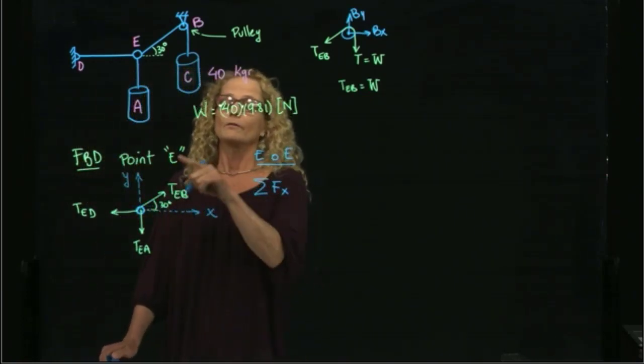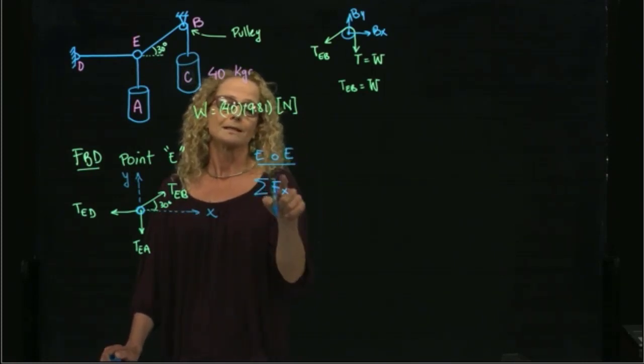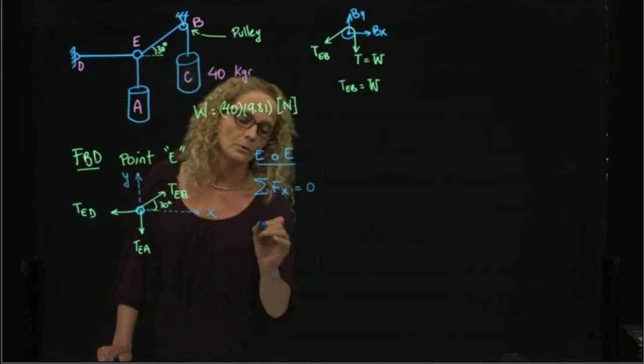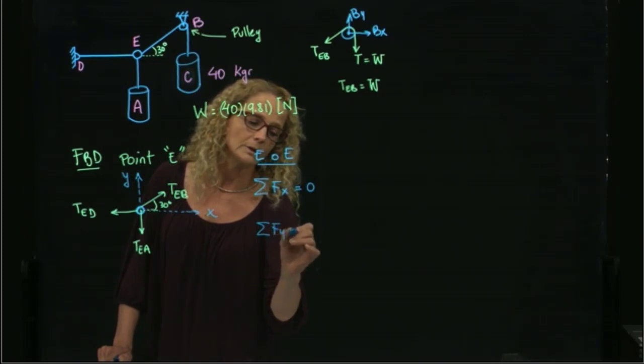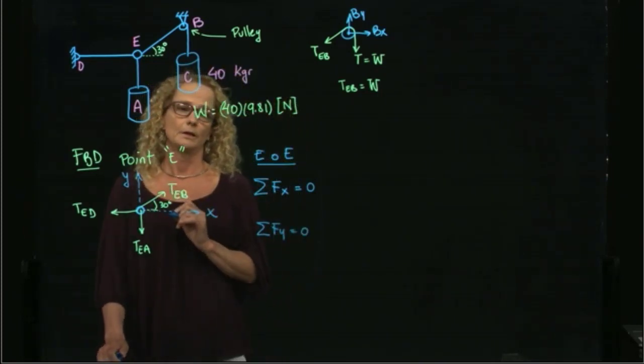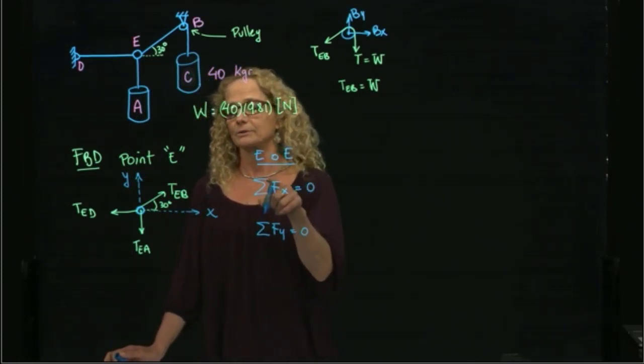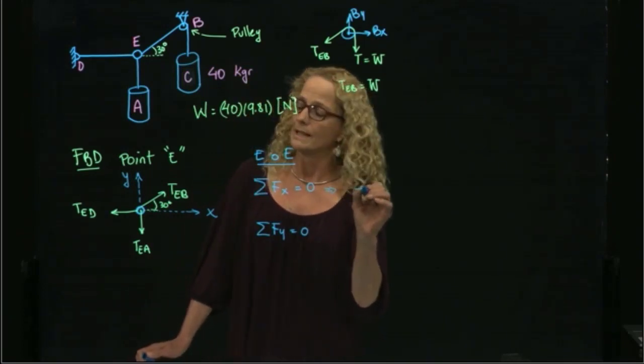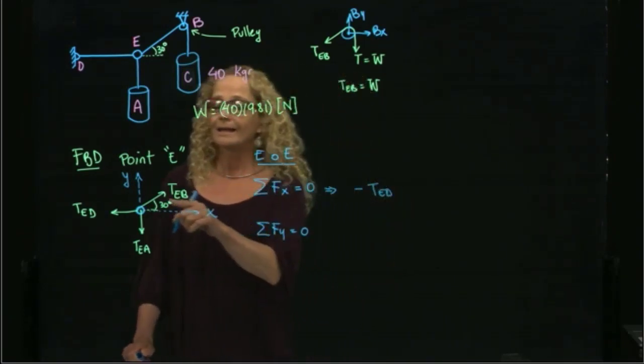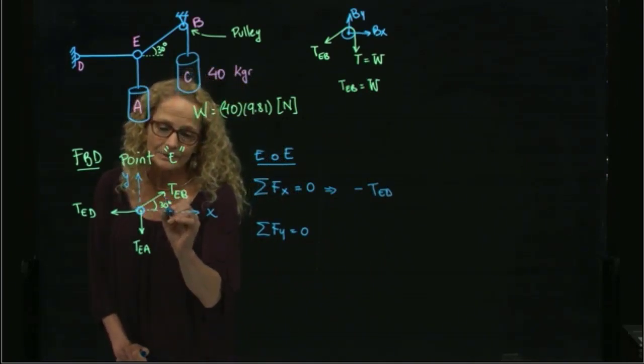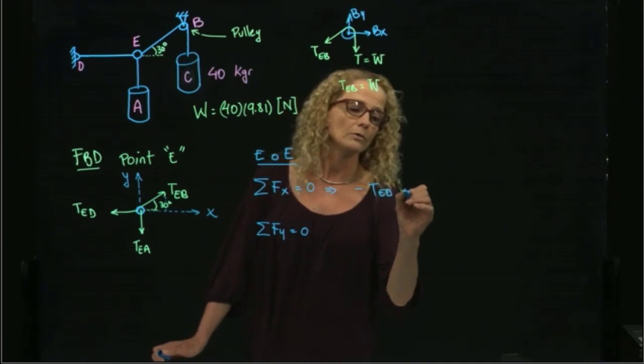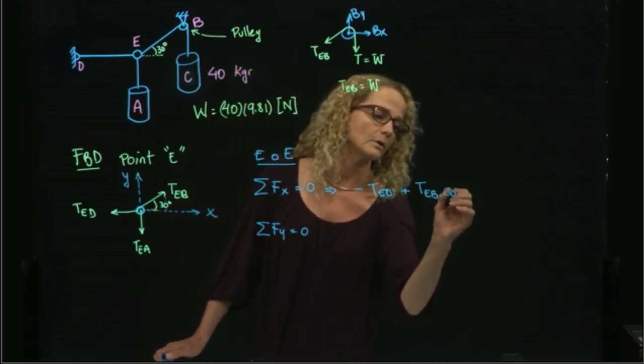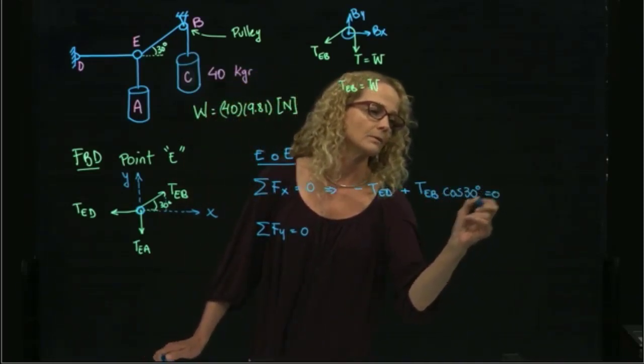So I am going to write my equations for the forces in x direction, and this is equal to zero because I am in equilibrium, and I will do the equations in the y direction, and this is also zero because it is in equilibrium. So what do we have in x direction? So in x direction we have this force over here, which is negative T Eb, and then we have the component in x direction of this force. That will be plus T Eb cosine of 30, and that is equal to zero.